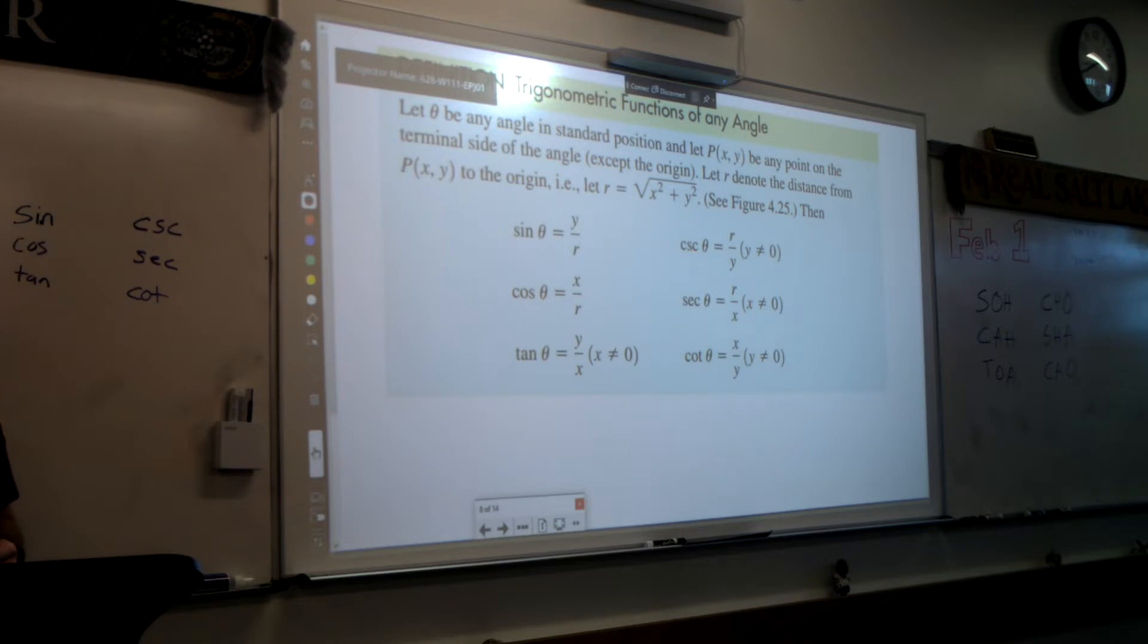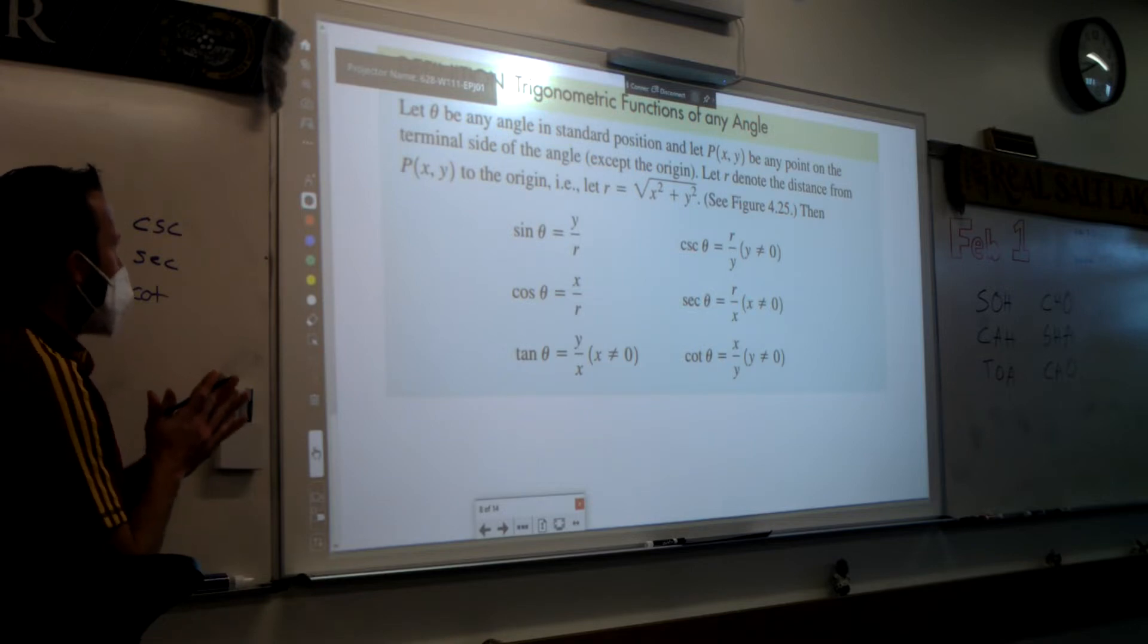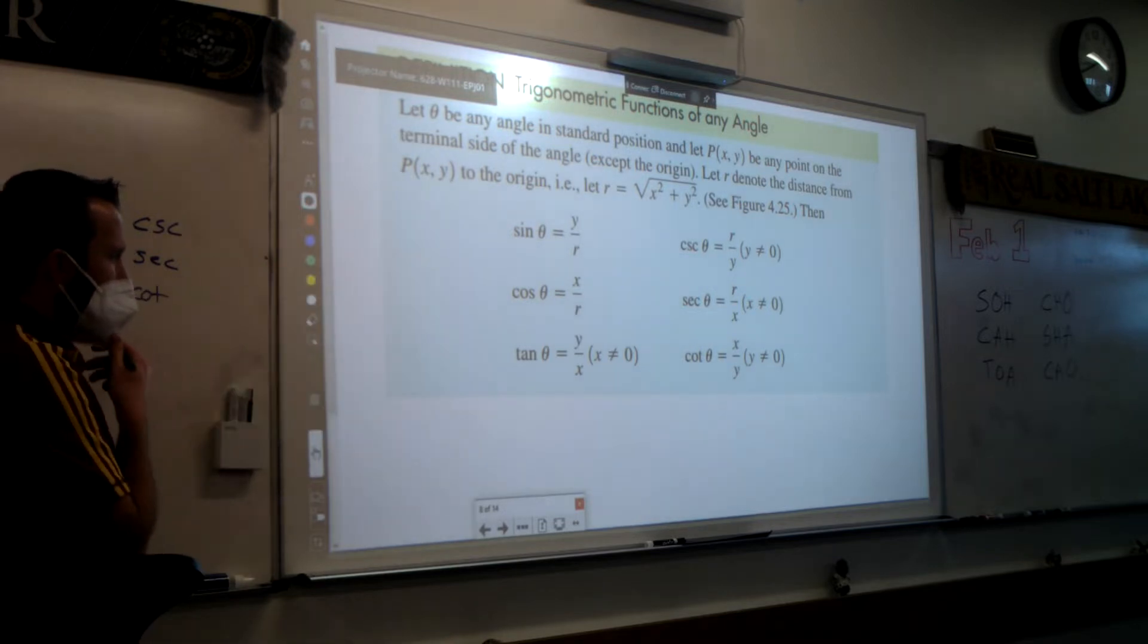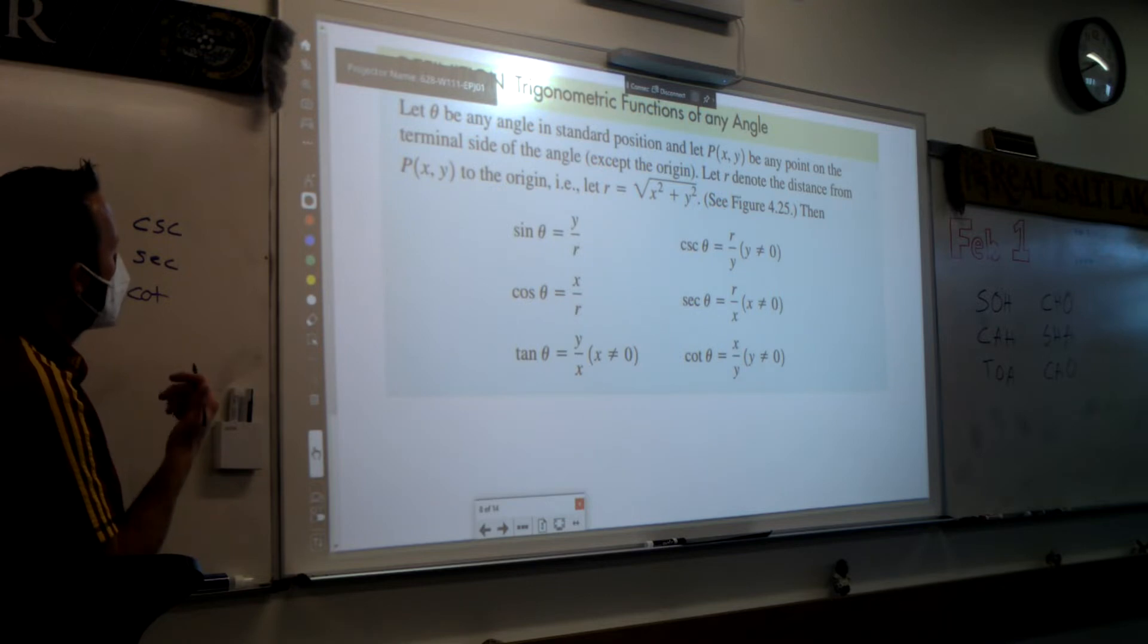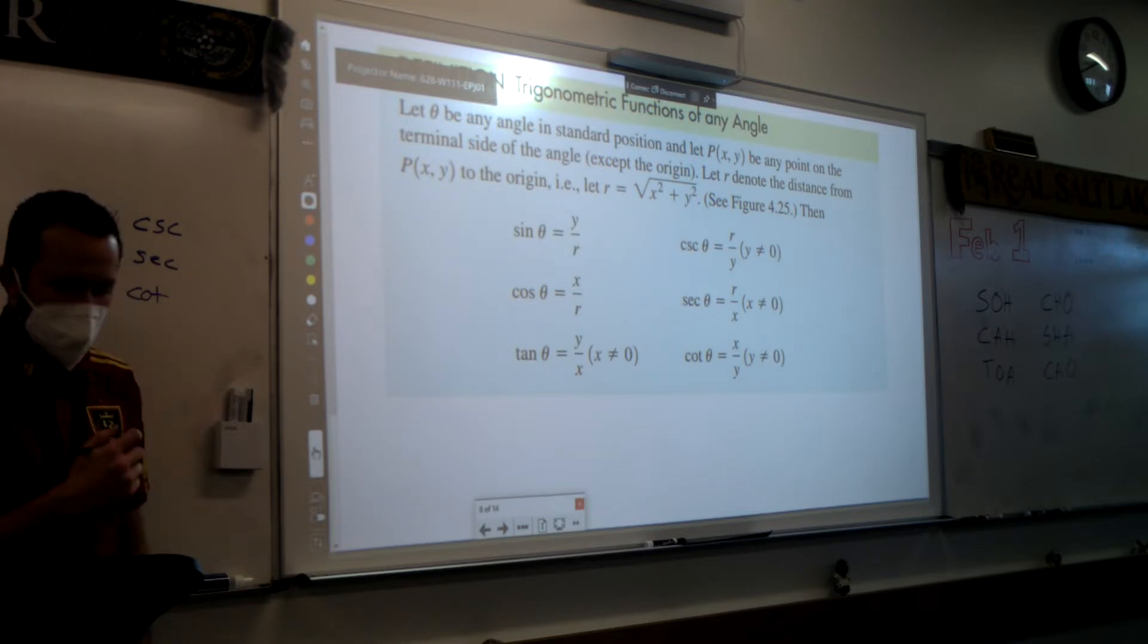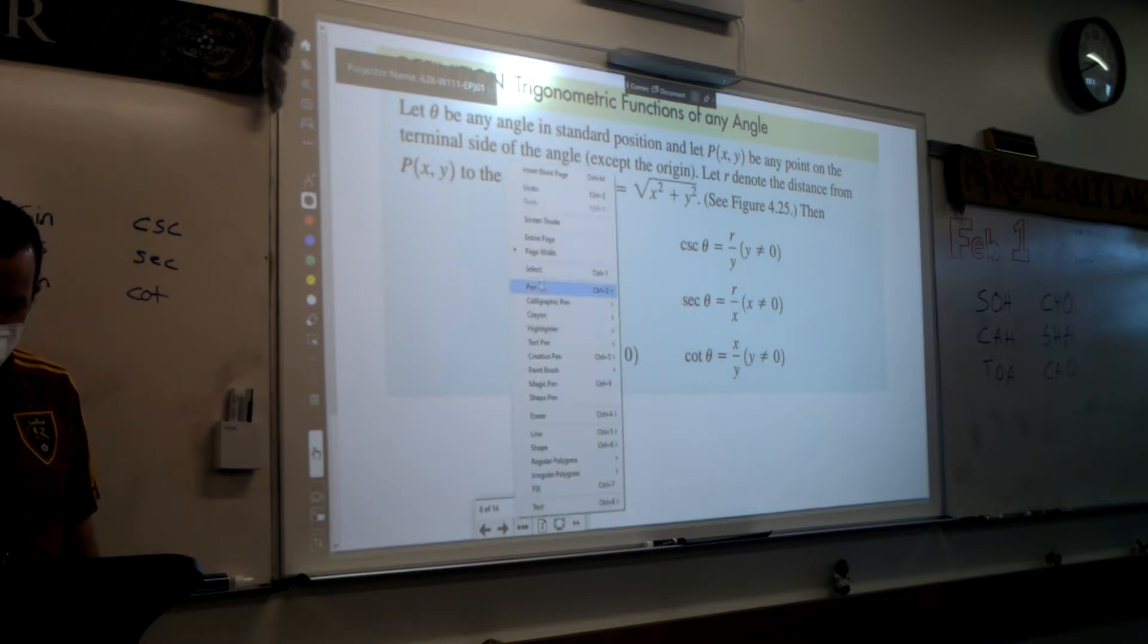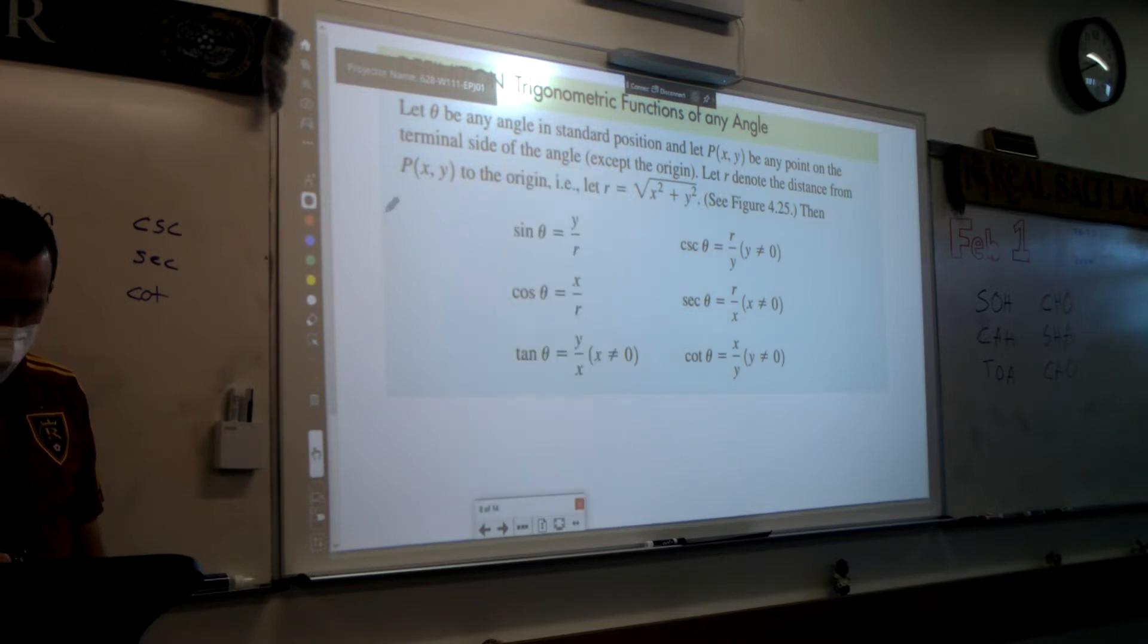Alright, now we're going to rewrite sine, cosine, tangent, cosecant, secant, cotangent. Instead of thinking of it in terms of opposite adjacent hypotenuse, we're going to think of it in terms of x, y, and r. And if you're like, where did we get r from? Basically, what we're going to do is we're going to look at this from a circle's perspective. So what do you think r stands for if we're talking about circles? Radius. Radius.